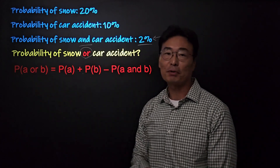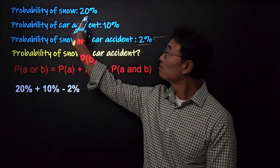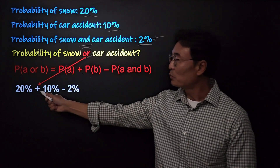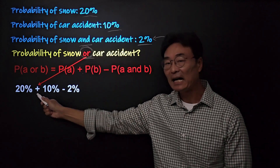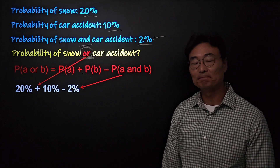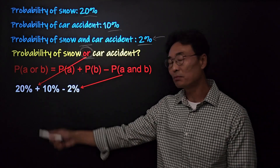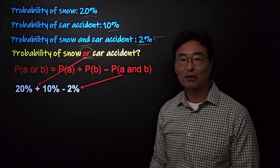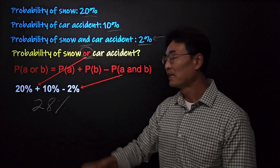We start with 20% (probability of snow) plus 10% (probability of car accident). Notice that for 'or' we add, and for 'and' we multiply. Unlike multiplication, when adding and subtracting percents we don't need to convert to decimals — we can work directly: 20 plus 10 is 30, minus 2 is 28. So the final answer is 28%.